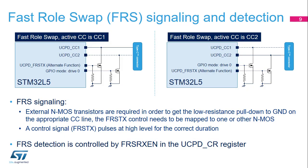The fast role swap protocol swaps the roles of DFP and UFP. The default power source node becomes the sink node and the default sink node becomes the source node. To request an FRS to the source node, the sink device temporarily connects the appropriate CC line to ground. This is achieved by external NMOS transistors on both CC lines; however, only one receives the FRSTX pulse. The NMOS on the inactive CC line should be driven with a logic zero level using GPIO mode. The FRX-RXEN bit in the UCPD CR register controls the FRS detection in the sink node; when this bit is set, FRS detection is enabled.